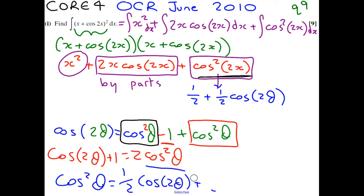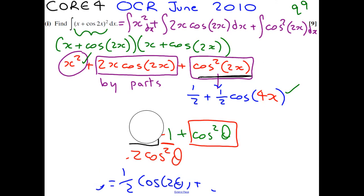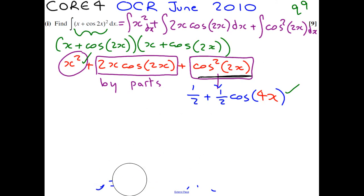So what we need to think about now is we call this 2x theta. So what we're actually timesing by 2 is the 2x. So that means that instead of 2 theta, we're going to have our angle as 4x now, which is very important. That is ready to integrate. This is ready to integrate. The only thing that isn't, we have to do the middle term by parts. So let's have a go at that now.